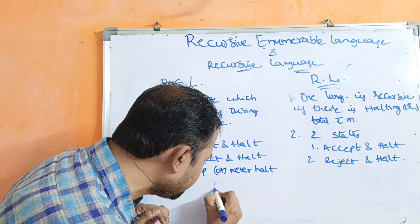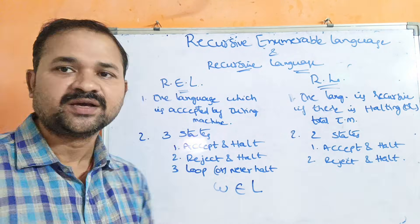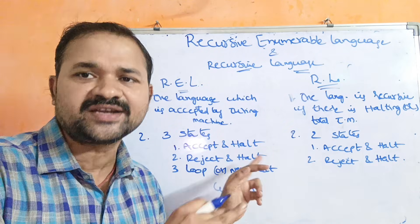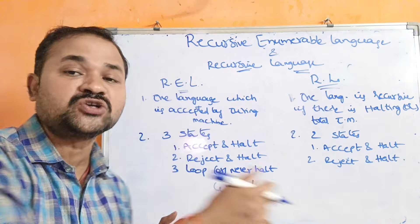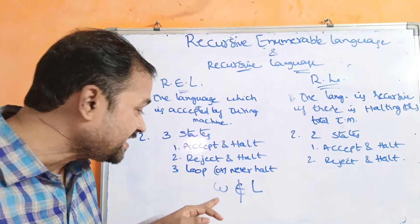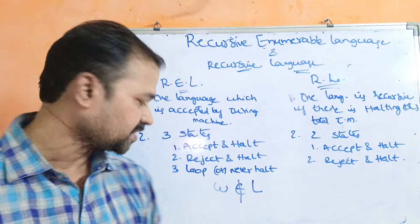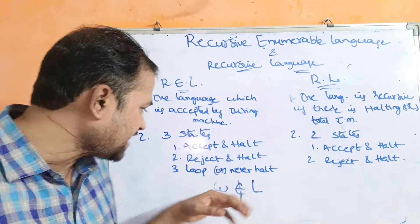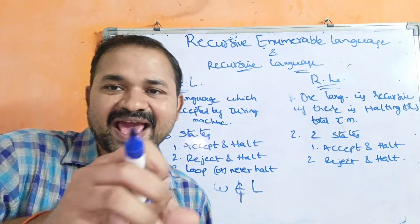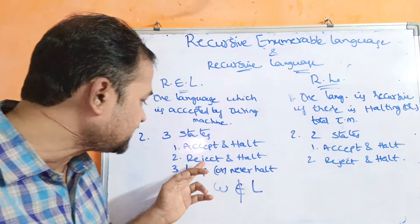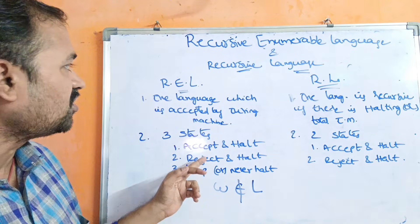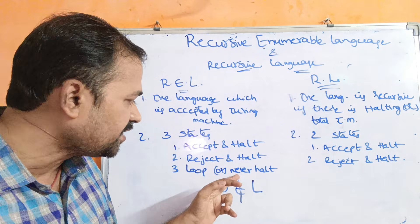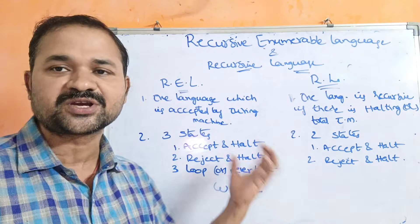So let us assume that we have a string W. If W belongs to the language, then we can say that the string is accepted by the Turing machine and after that it will halt. Suppose if the string doesn't belong to the language, then the corresponding string is rejected by the Turing machine and it will halt. One more scenario is loop or never halt — that means it never accepts nor rejects. If the string is neither accepted nor rejected by the Turing machine, it is called the loop state. So this is nothing but going into an infinite loop. Loop means neither accept nor reject.